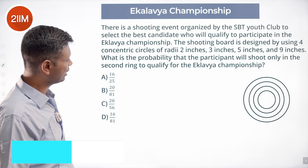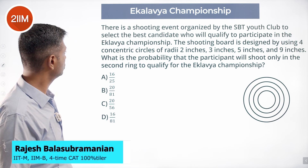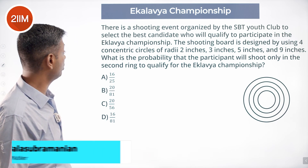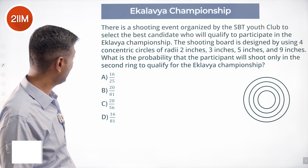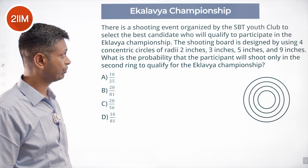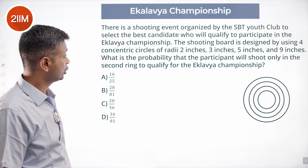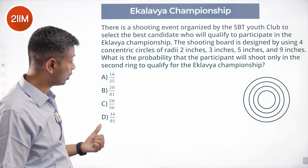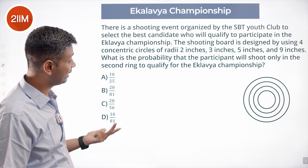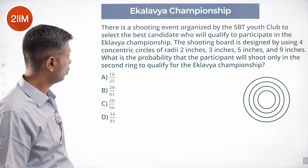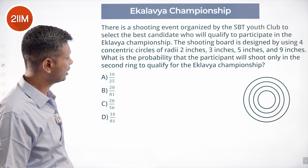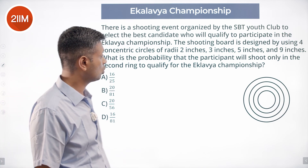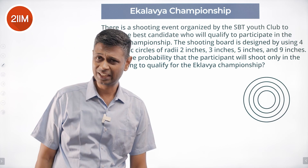It's a shooting event organized by the SBT youth club to select the best candidate who will qualify to participate in the A Calafia championship. The shooting board is designed using four concentric circles of radii 1, 2, 3, 5, and 9. What is the probability the participant will shoot only in the second ring to qualify for the A Calafia championship?